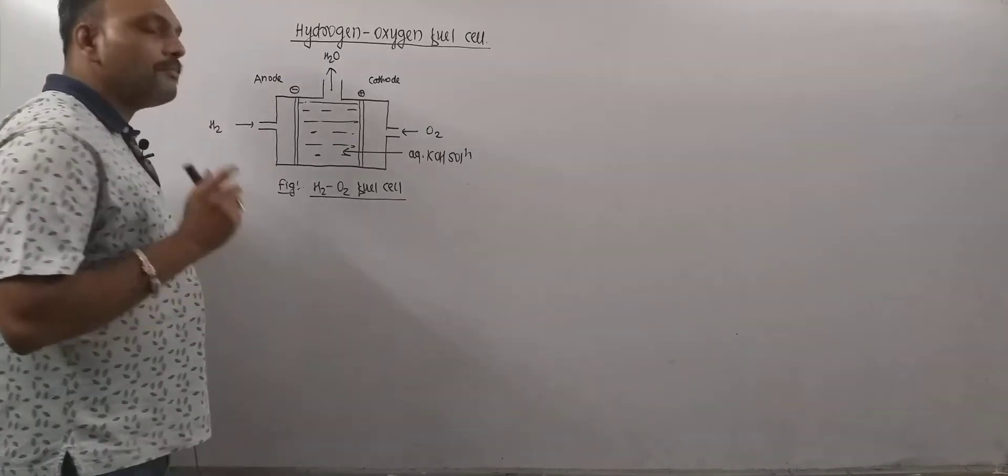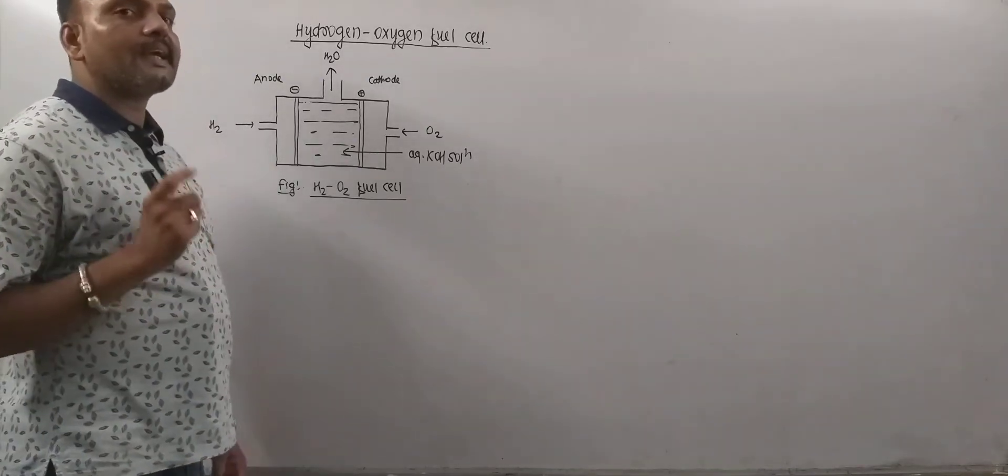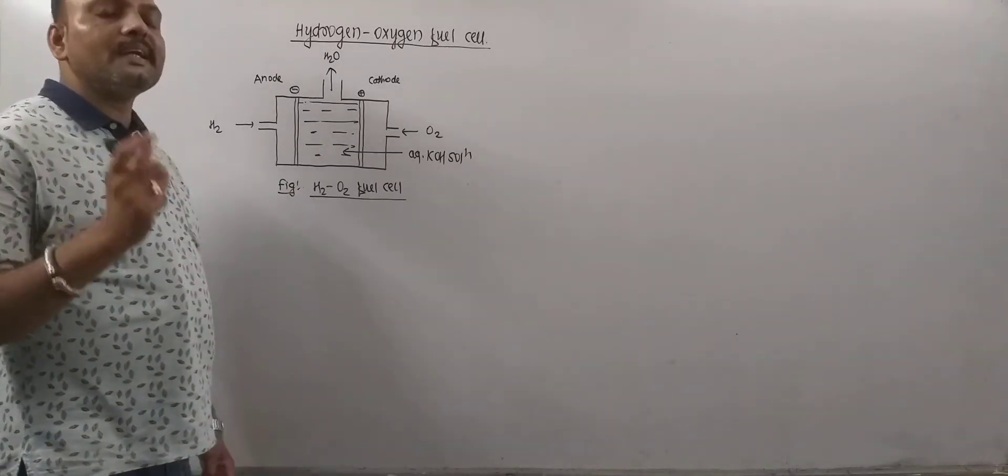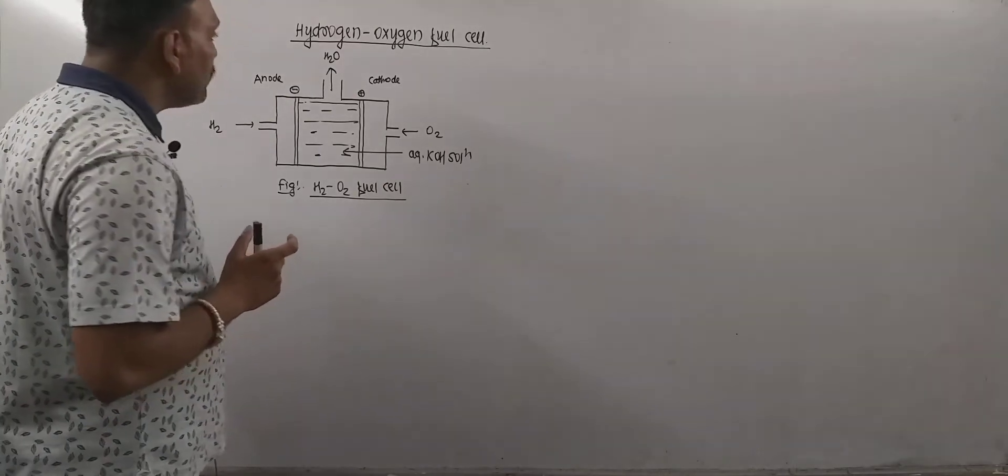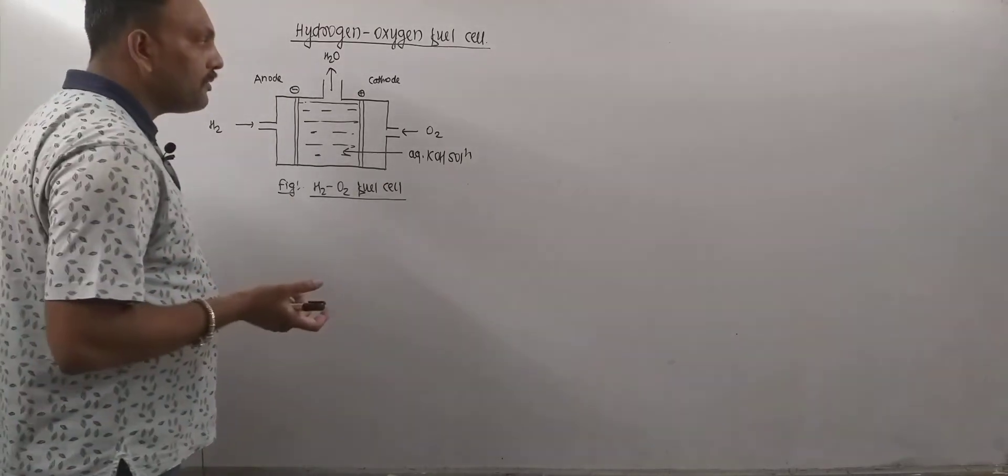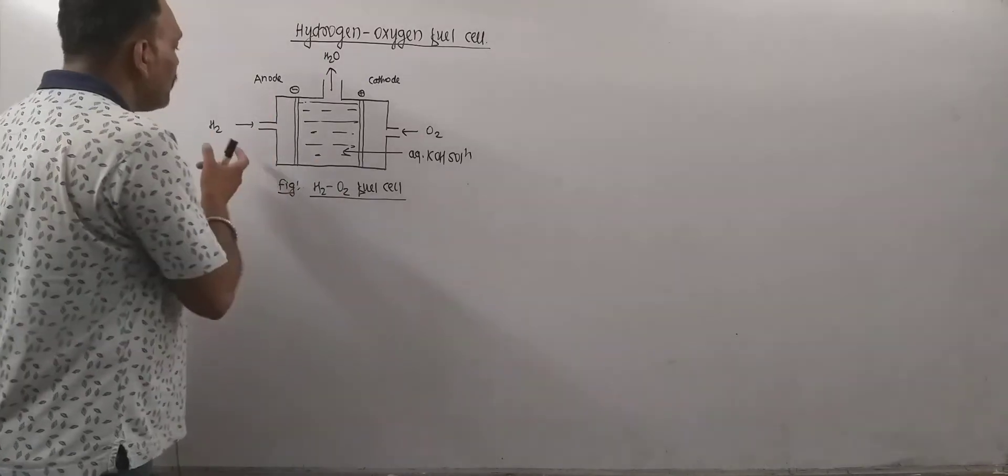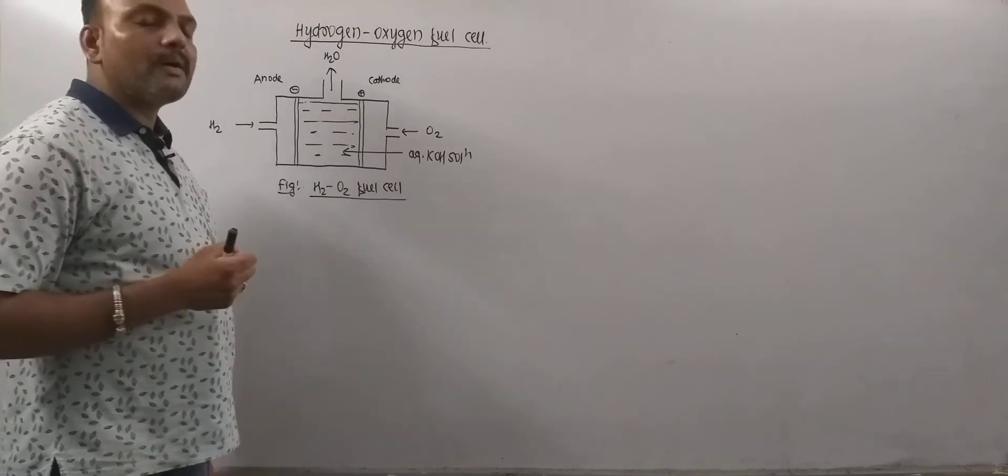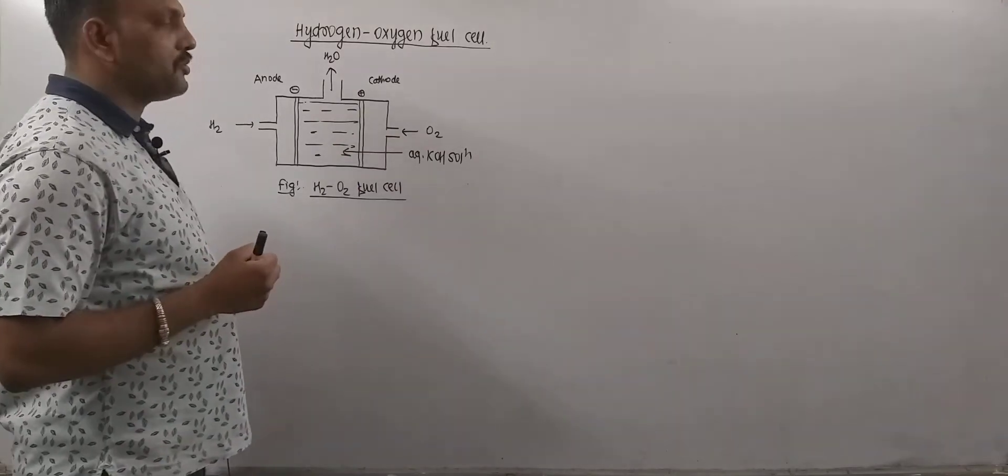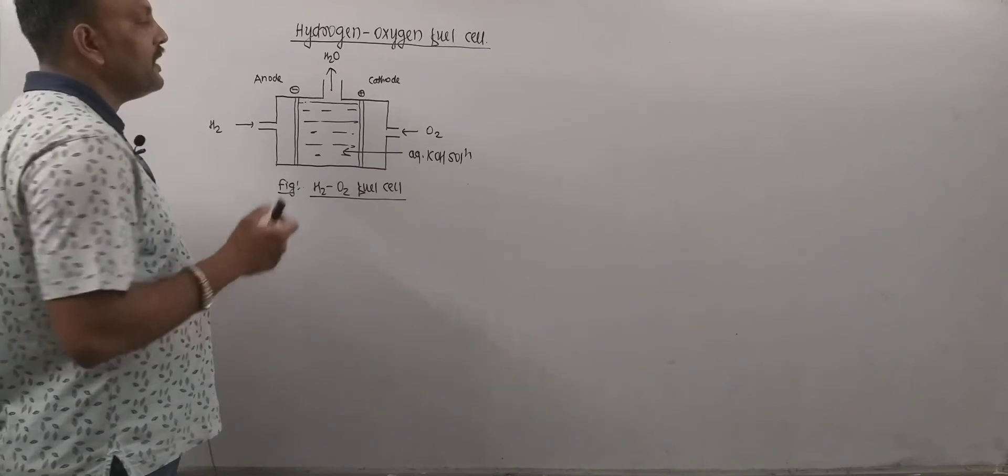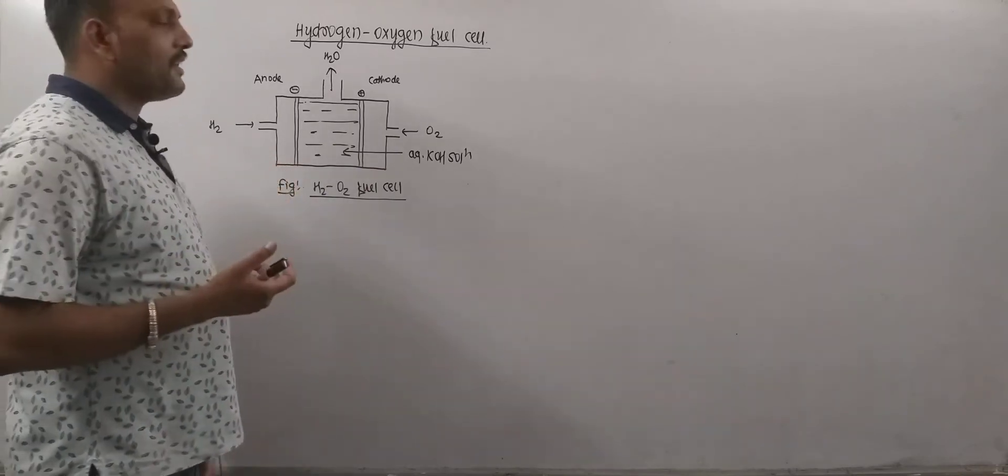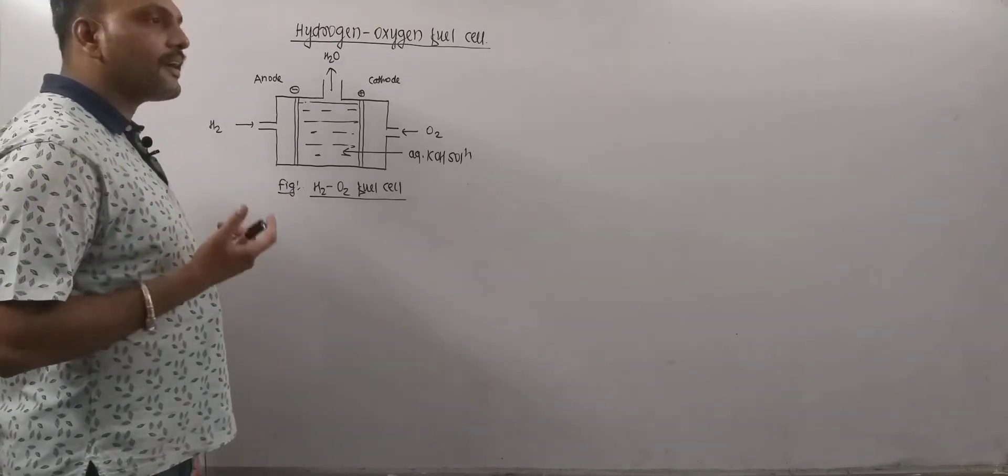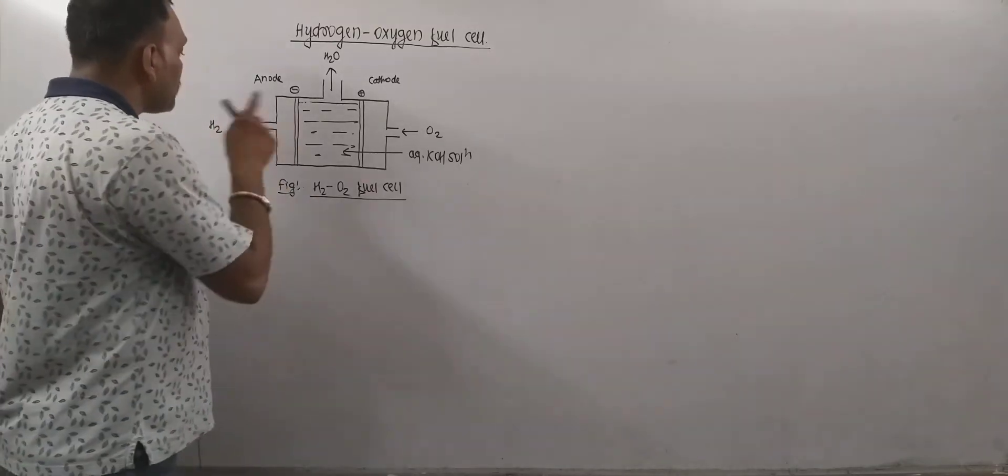Remember, platinum serves as electrode catalyst. So the role of platinum is to increase the electrode reaction. Now we need to bubble the two gases. From anode we need to bubble H2 gas and from cathode we need to bubble O2 gas. So on bubbling of these two gases in an electrolyte like KOH, cell produces electric current on account of the combustion of hydrogen.